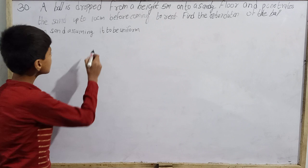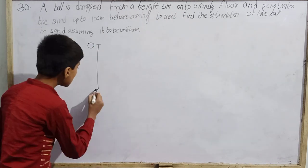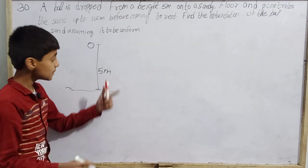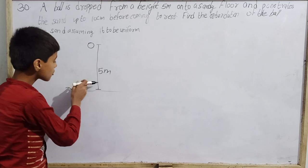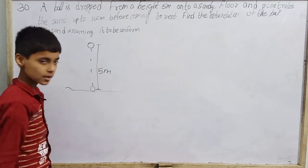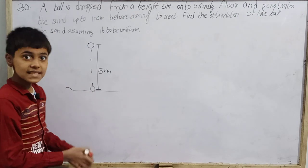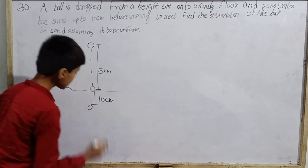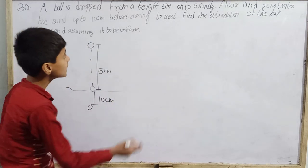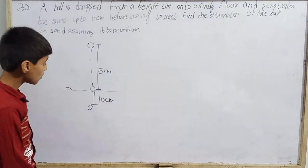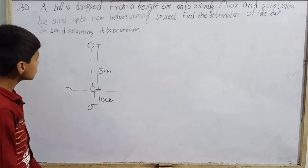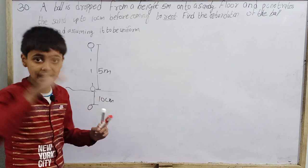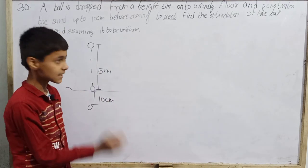Suppose I keep a ball here at a height of 5 meters from a sandy floor. Initially the ball is at 5 meters height. I drop it from here, after some time the ball reaches the floor, then it penetrates inside — it went 10 cm inside the sand. What is given: height is 5 meters, initial velocity is 0 because it was dropped, and assuming air resistance to be 0.